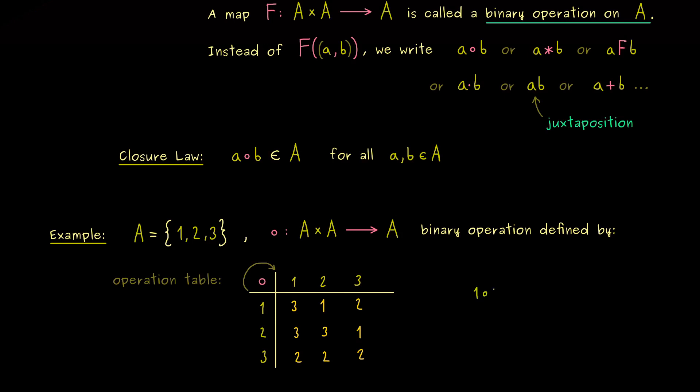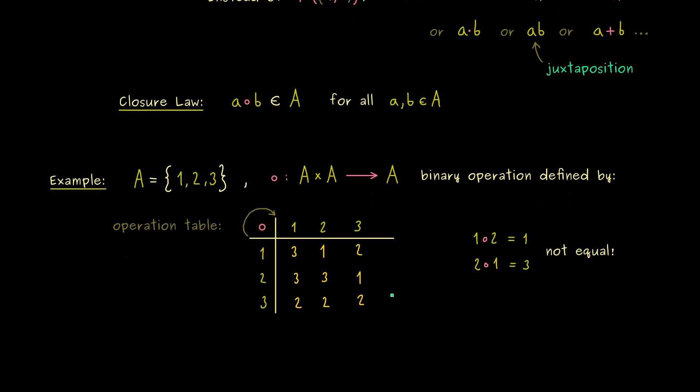But then you should already see that the order of the operation matters. So 1 circle 2 is not the same as 2 circle 1. In fact, by definition the one thing is 1 and the other thing is 3. So this is something you should immediately remember: the commutativity is not given in the definition of a binary operation. Therefore, if you combine more elements in a row, the order also matters.